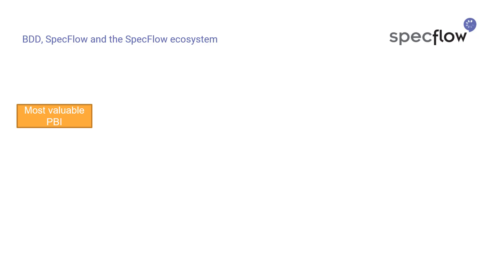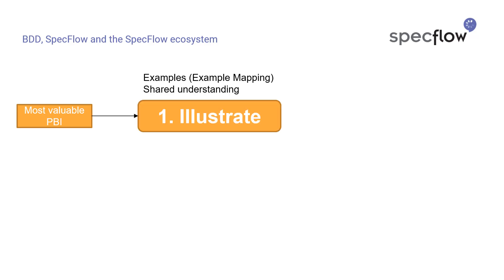Behavior-driven development starts with a product backlog item, a piece of functionality that a software development team wants to add to their product. The first phase of the BDD process is the illustration phase, also sometimes referred to as the discovery phase. In this phase, the three amigos — the business, the developers, and the testers — create examples that describe the intended behavior of the feature that's going to be developed.